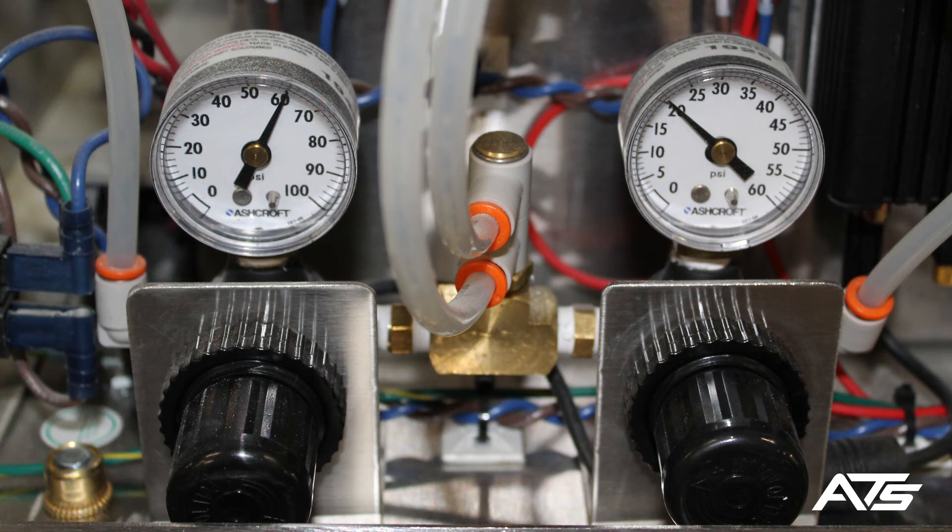The bearing pressure regulator is located to the right of the line pressure regulator and is set at 20 psi. Before using the BBR, ensure that both regulators are set to the appropriate pressure.